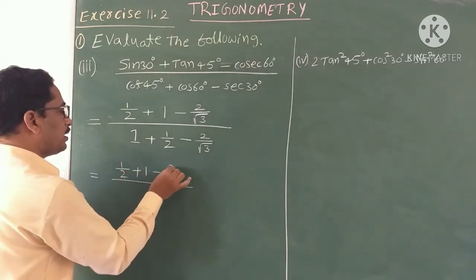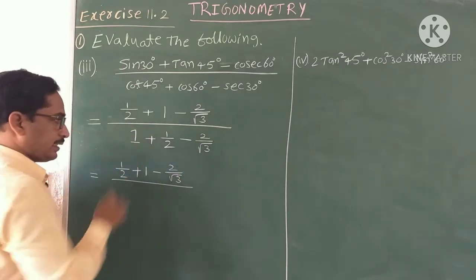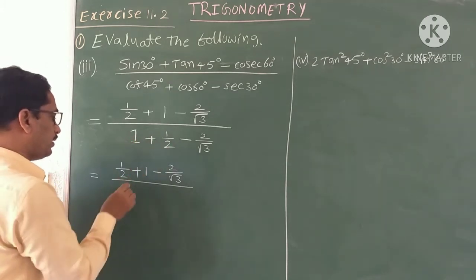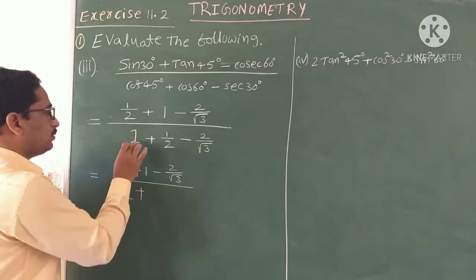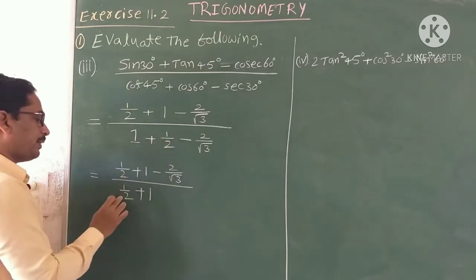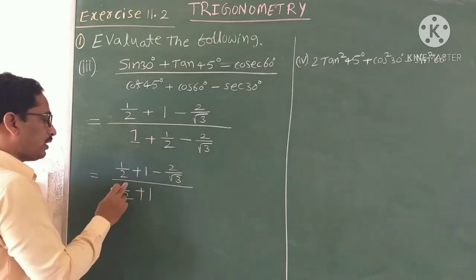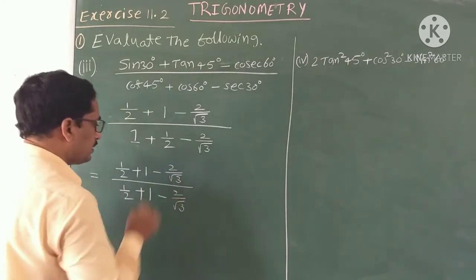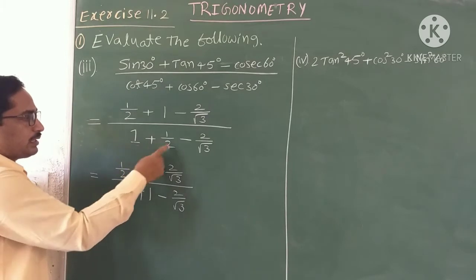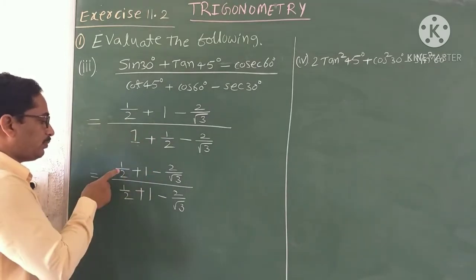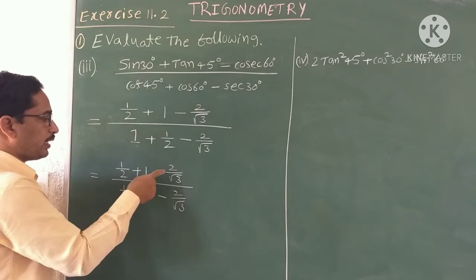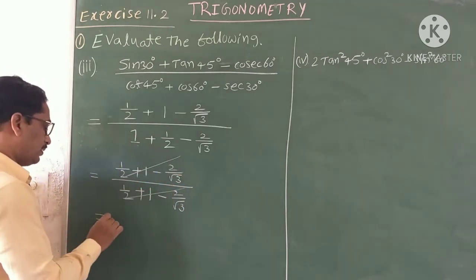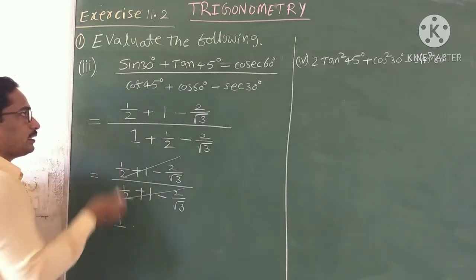Numerator: 1/2 + 1 − 2/root 3. Denominator rearranged: 1/2 + 1 − 2/root 3. Nothing has changed except the order of terms, since A + B equals B + A. The numerator and denominator are identical and therefore cancel. The answer is 1. So the third answer is 1.